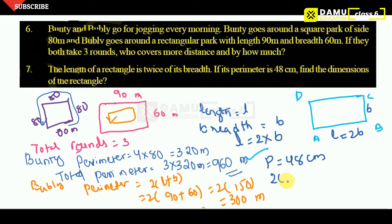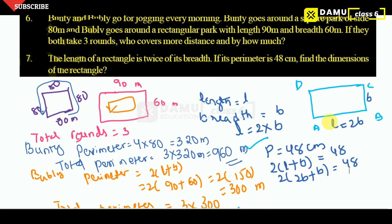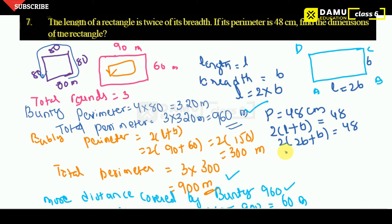So perimeter is 2 into L plus B, that is 48. 2 into L is what? 2B plus B. Substituting in place of L, we are substituting 2B. Then what you will get here? 2 into 2B plus B, 3B equal to 48. 2, 3s are 6B equal to 48. B will be equal to 48 by 6. So 6, 1s are 6, 8s are. B will be equal to 8 centimeter.